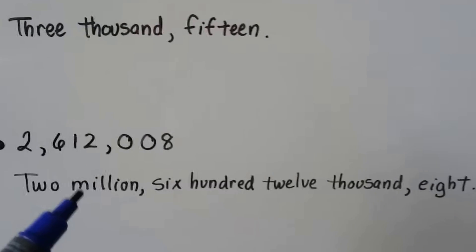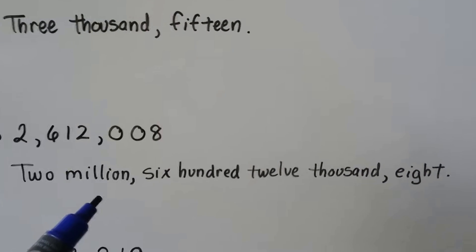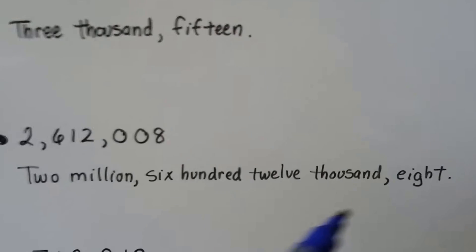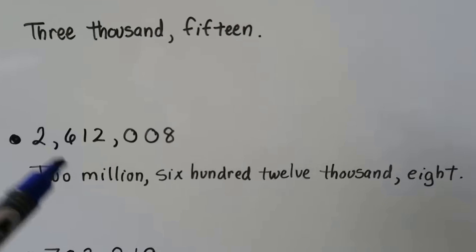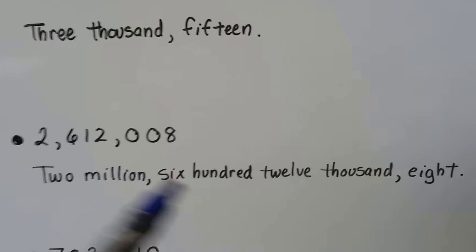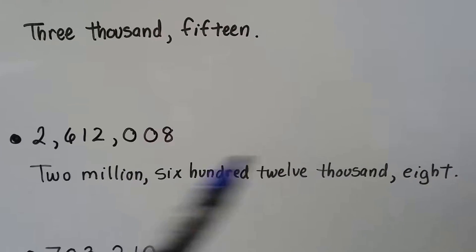This one is two million six hundred twelve thousand eight. There's no hundreds or tens, so we go straight to the eight. And there's a comma after the two million. There's a comma after the twelve thousand.